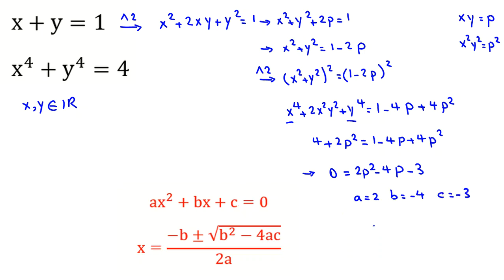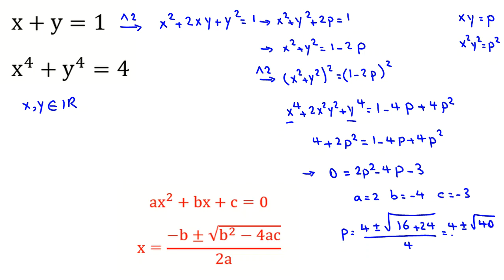So if we want to find p: negative b is 4, plus or minus the square root of b squared minus 4ac, which is 16 minus 4 times 2 times negative 3, giving 16 plus 24, all over 2a which is 4. So p equals 4 plus or minus square root of 40, over 4, which simplifies to 2 plus or minus square root of 10, all over 2.